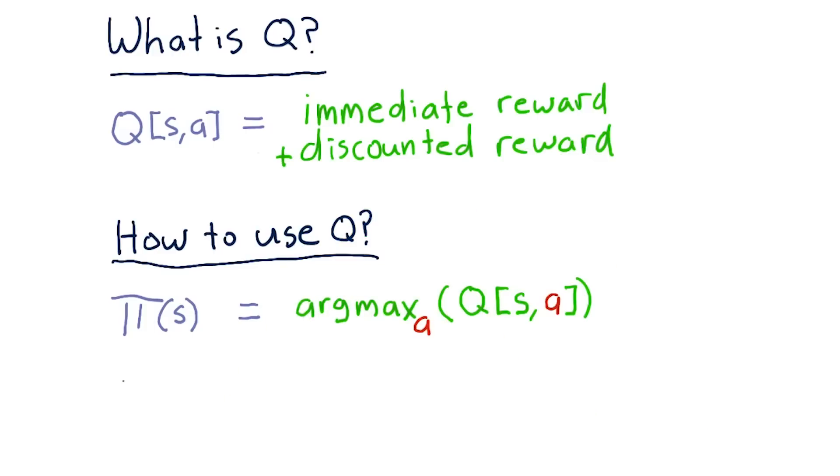After we run Q learning for long enough, we will eventually converge to the optimal policy. And we represent that with a little star. So the optimal policy is pi star of S. And similarly, the optimal Q table is Q star [S,A].